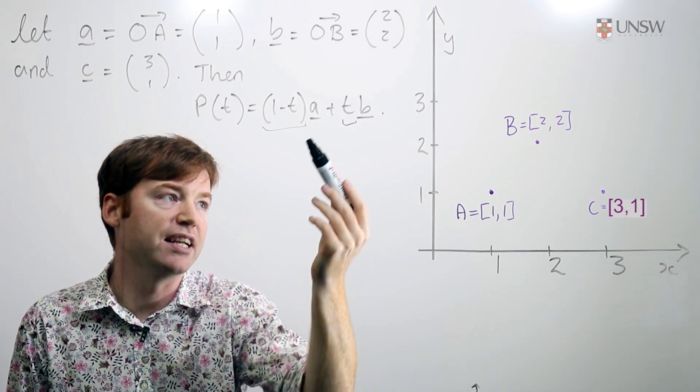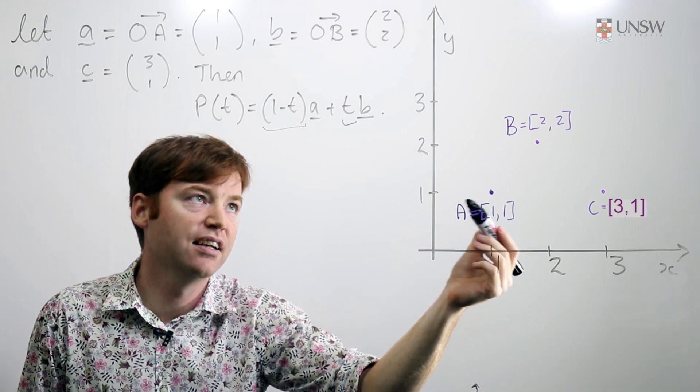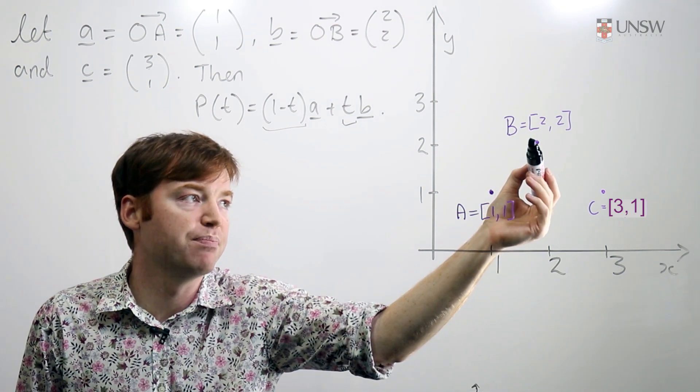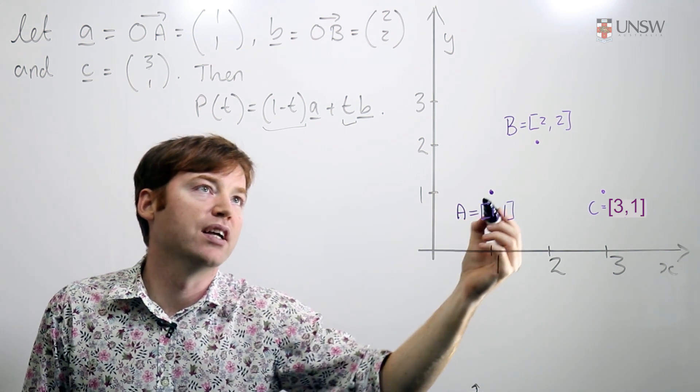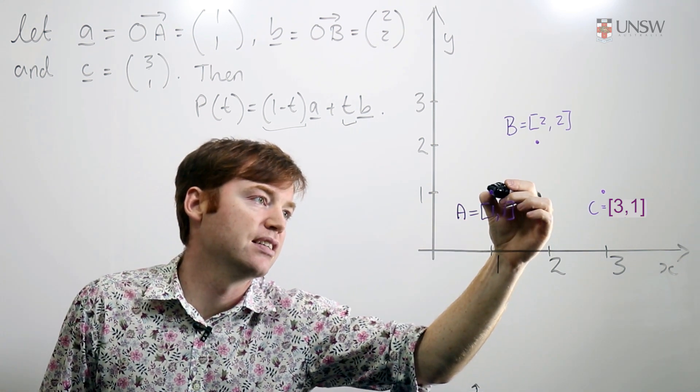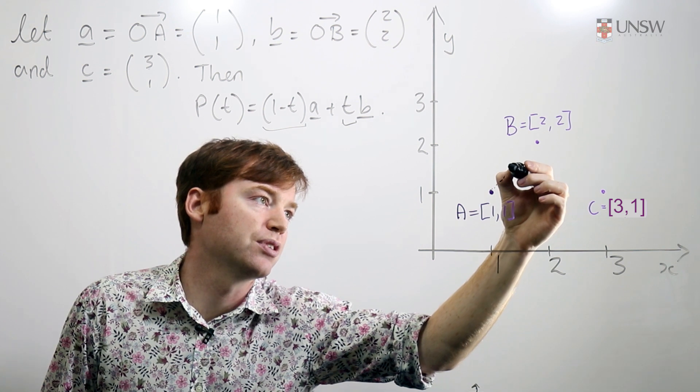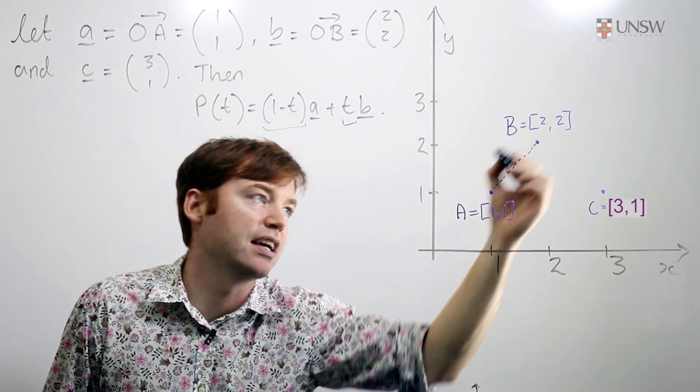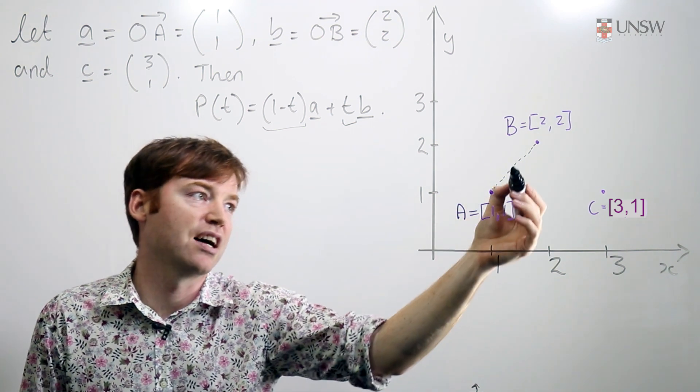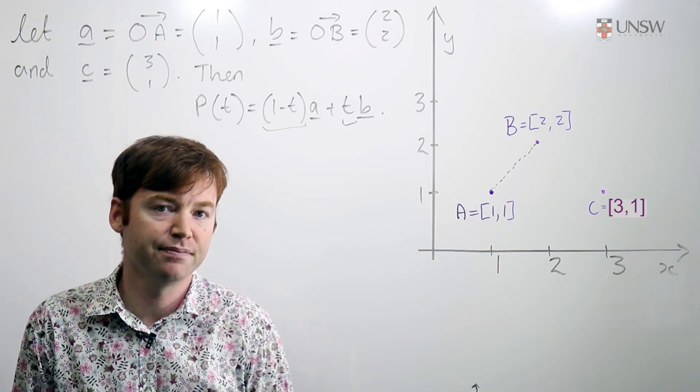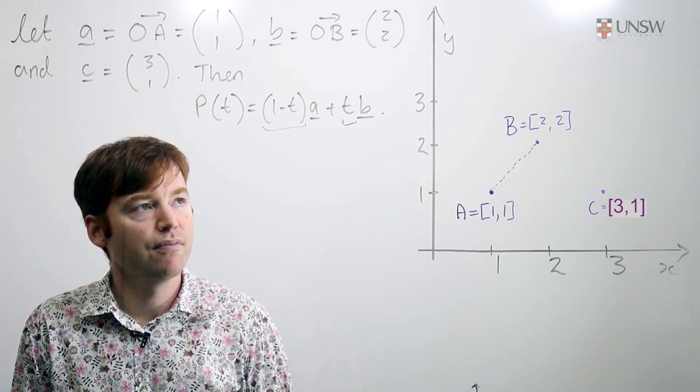When t is 0 all the weight is at a and the point is at a. When t is 1 all the weight is at b and the point is at b. And when t is somewhere between 0 and 1 then the line is somewhere proportionally between a and b. For example when t is half then we're halfway between a and b.